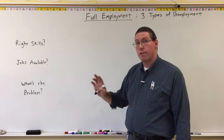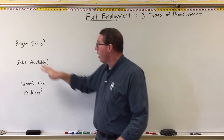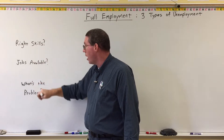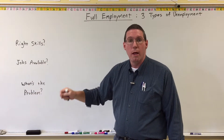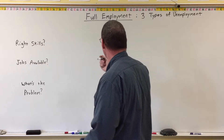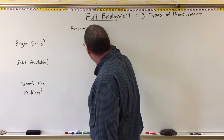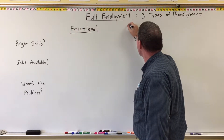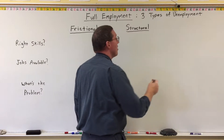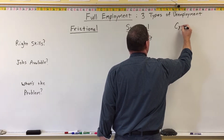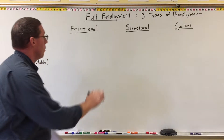Now that we have those questions and considerations, we can identify the three types of unemployment. These three types are related to whether workers have the right skills, whether there are jobs available, and in each type I'll identify what the problem is — why people don't have jobs. The three types of unemployment are: frictional, structural, and cyclical unemployment.